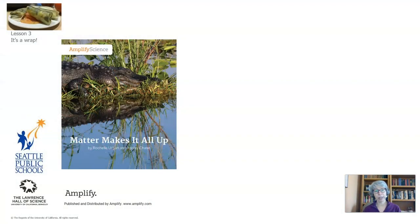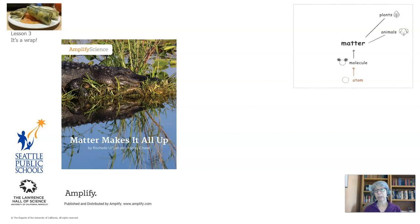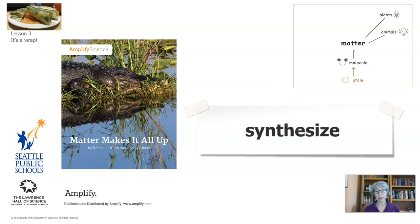Before we get started, let's review. Lesson three is a wrap. We looked at the book Matter Makes It All Up, and we wanted to find out how animals grow. We learned from the book and the reading that everything is made up of matter, and that all matter is made up of molecules and atoms that are too small to be seen. We synthesized these ideas together — we knitted them together. We learned that animals are made of matter, and they grow by eating food, which is also made of matter.